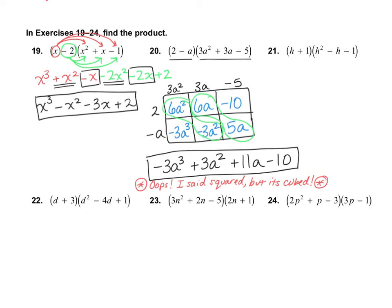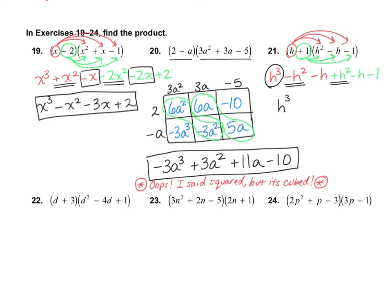I'm going to do one more problem because something interesting happens on number 21. I'll use the distributive method. h times h squared is h to the power of 3. h times negative h is negative h squared. h times negative 1 is negative h. Now taking the second term and multiplying through: plus h squared minus h minus 1. When I combine like terms, I notice that negative h squared and positive h squared cancel out, leaving no h squared terms. Then negative h and negative h gives negative 2h. And lastly, minus 1. So the answer is h to the power of 3 minus 2h minus 1.